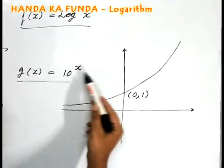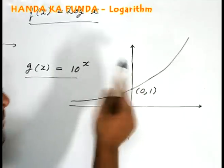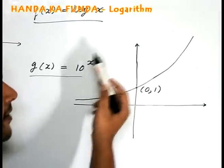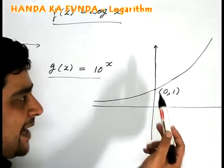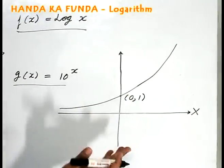As when x moves from 1 to 2, it moves from 10 to 100. When it moves from 2 to 3, it moves from 100 to 1000. 10 raised to any power can never be negative. And that is the reason why it is always above the x-axis.